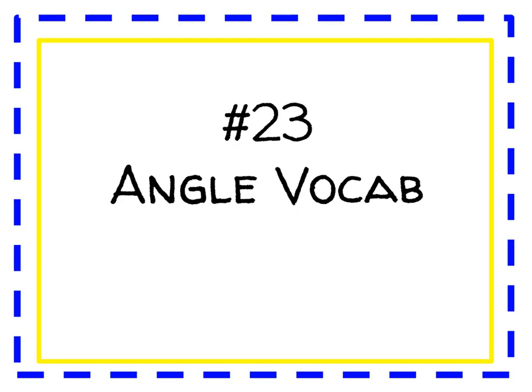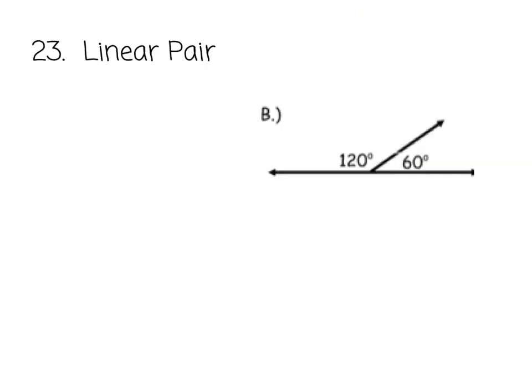Problem number three deals with a lot of angle vocabulary, so what I'm going to do is break down each one. A linear pair, the answer is B. Linear pair, linear means line.